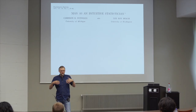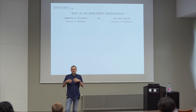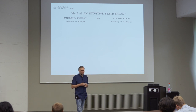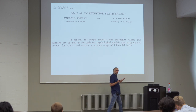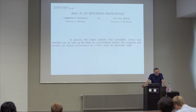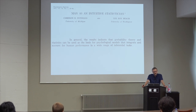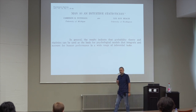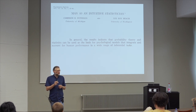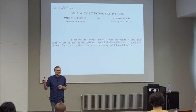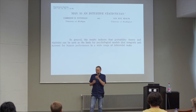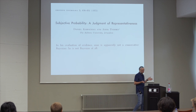What they did is they reviewed the empirical evidence collected in psychology, but also in economics, about how people reason statistically and how well they deal with an uncertain world. Here's their main conclusion from their narrative review: 'In general, the results indicate that probability theory and statistics can be used as a basis for psychological models that integrate and account for human performance in a wide range of inferential tasks.' In other words, if you want to model how people make uncertain inferences, start with models of statistics and probability theory — it's an excellent starting point, not the full story, but an excellent starting point. That was five years before the next paper.